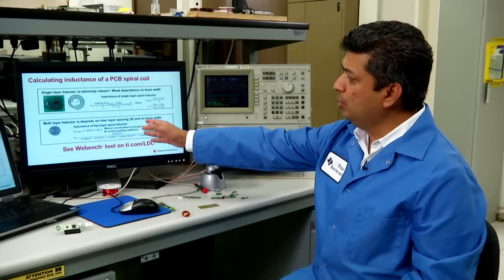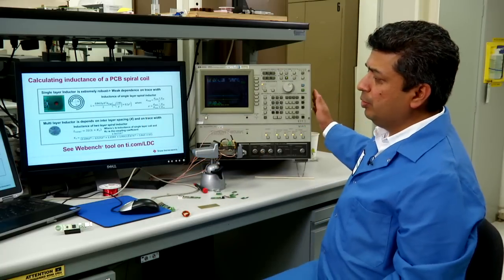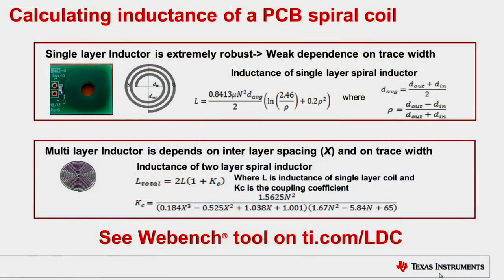In addition to using the instrument, we also have a simulation based tool at ti.com slash LDC where you can input the coil parameters and derive Rp min and Rp max setting for your specific coil. Thanks for watching and for more information, please visit ti.com slash LDC.